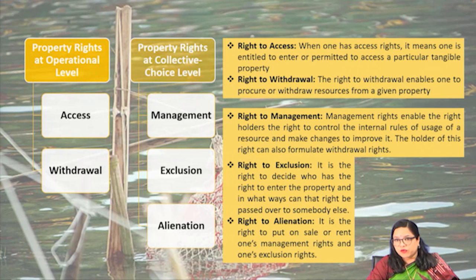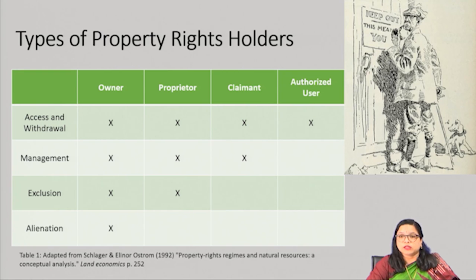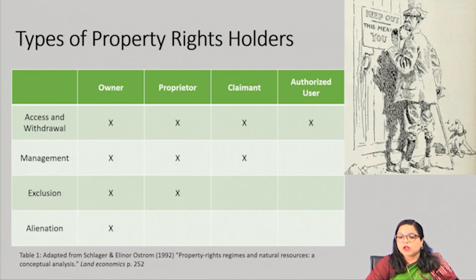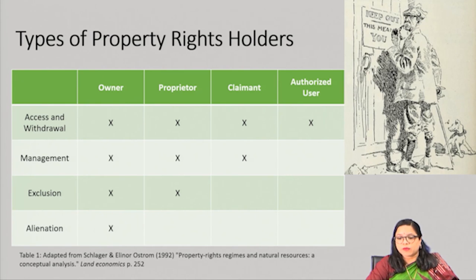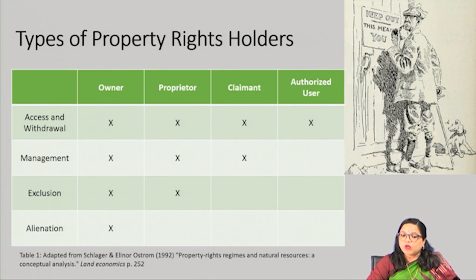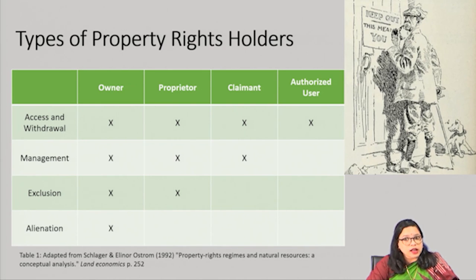Schlager and Ostrom researched in the areas of fisheries rights, namely the lobster industry of Maine, and identified four sections of property rights holders: authorized users, claimants, proprietors, and owners. All four — owners, claimants, proprietors, and authorized users — have access and withdrawal rights. Owners, claimants, and proprietors have management rights, whereas owners and proprietors have exclusion rights, and owners alone have the alienation right. Hence, owners of a resource enjoy all rights associated with the management of a resource — access, withdrawal, management, exclusion, and alienation rights at both tiers.